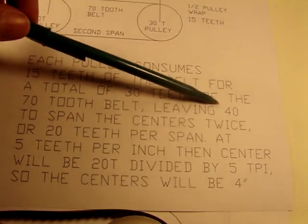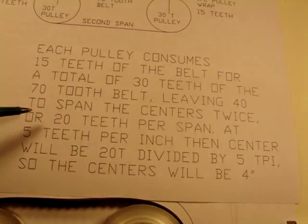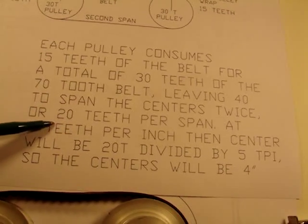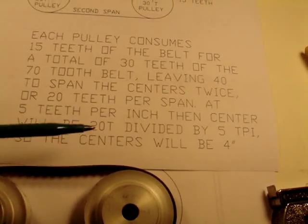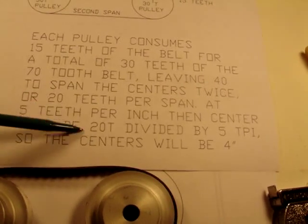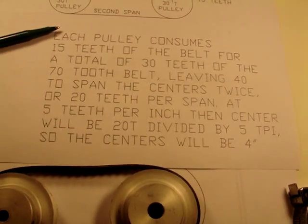Leaving you 40 teeth to span the two distances, or 20 teeth per span. And at 5 teeth per inch, this center distance calculates out 20 teeth divided by 5 is 4 inches.